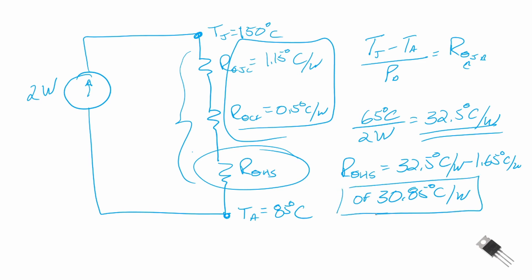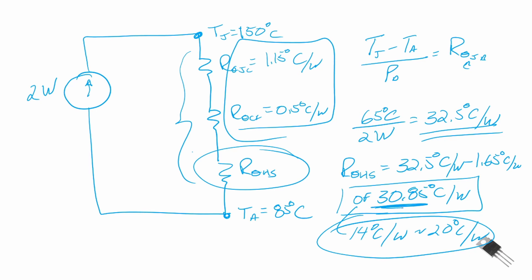If you go and look online for a typical aluminum finned heat sink for a TO220 type of package, you will see values that range on the order of 14 degrees centigrade per watt to maybe 20 degrees centigrade per watt. So as long as we have something that is less than 30.85 degrees centigrade per watt, we'll be able to meet our specifications of keeping that junction temperature less than 150 degrees centigrade if our maximum ambient is 85 degrees C.